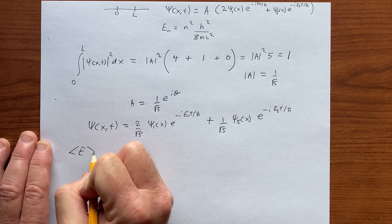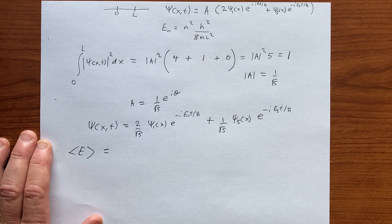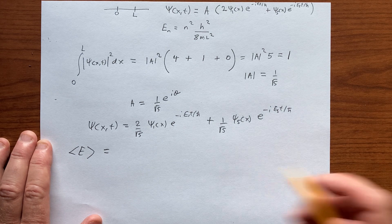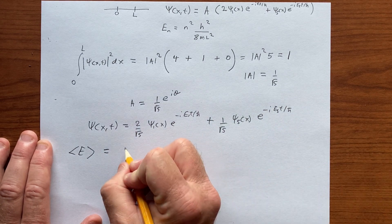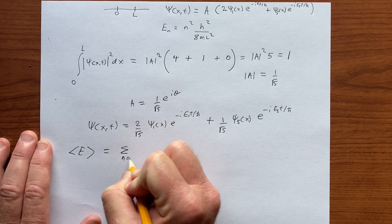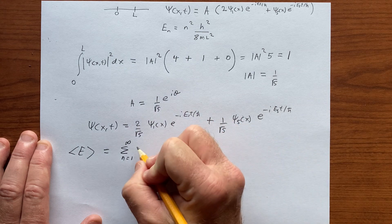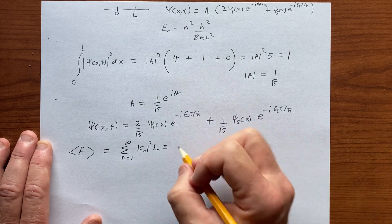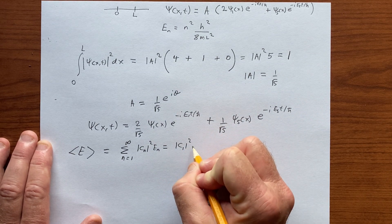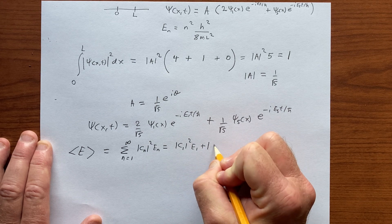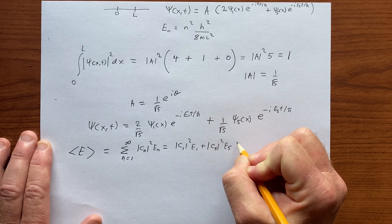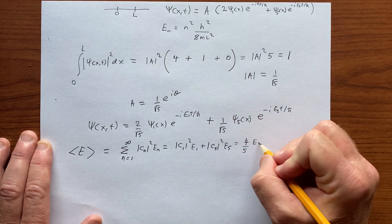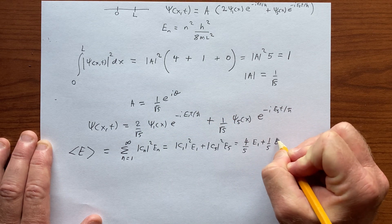And now we can do the expectation value of the energy. We measure the energy for many such systems in this state, and every time we measure the energy, we get some value, either E1 or E5, and then we'll do an average. So it's En equals 1 to infinity, we know that cn modulus squared times En gives us the average value of energy, which in this case reduces to c1 modulus squared times E1 plus c5 modulus squared times E5, which is just 4 fifths E1 plus 1 fifth E5.